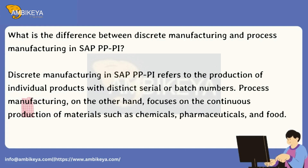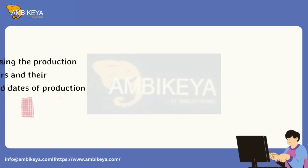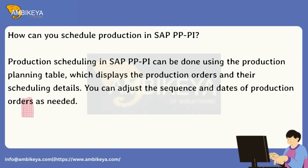What is the difference between discrete manufacturing and process manufacturing in SAP PP-PI? Discrete manufacturing refers to the production of individual products with distinct serial or batch numbers. Process manufacturing, on the other hand, focuses on the continuous production of materials such as chemicals, pharmaceuticals, and food.